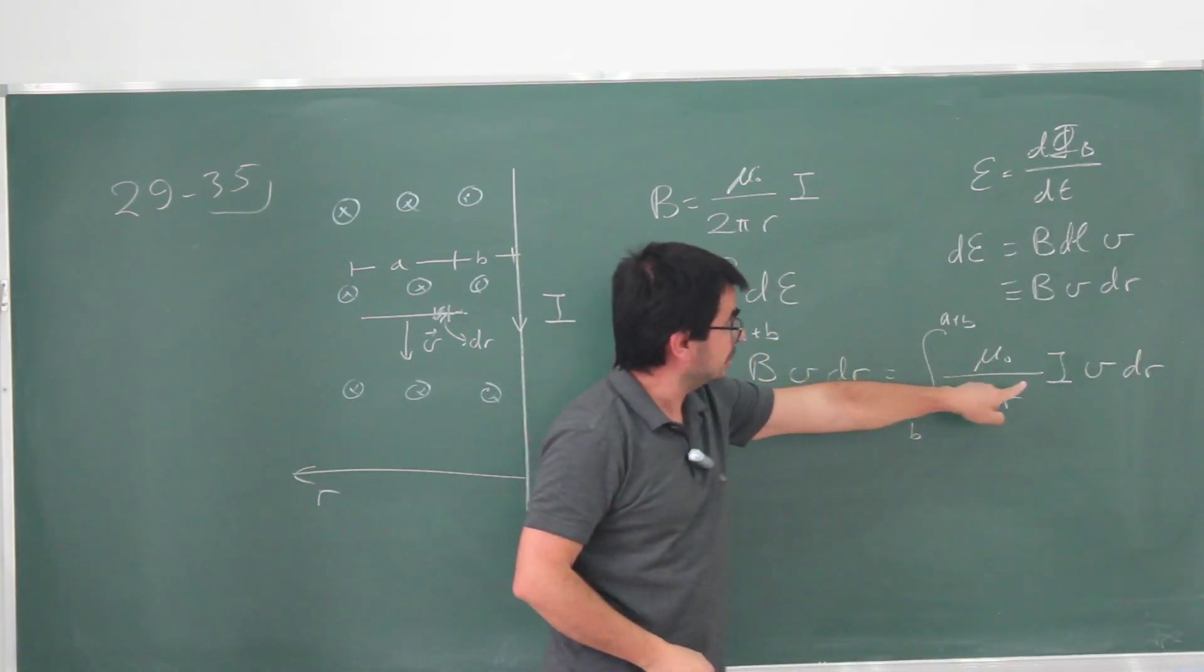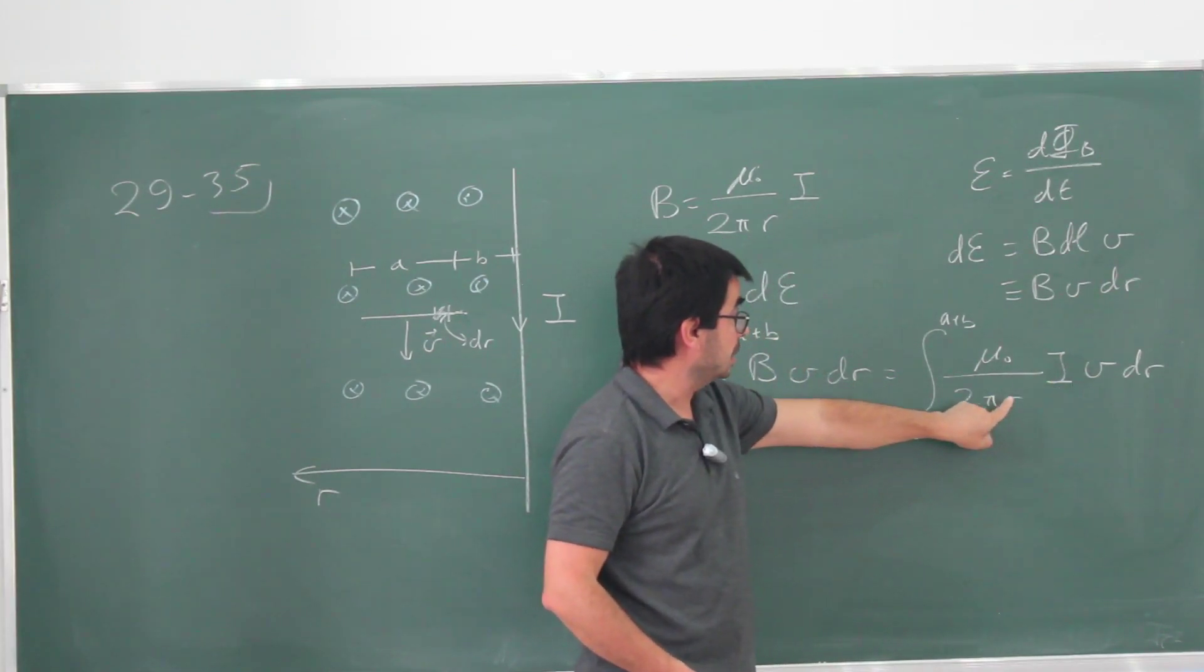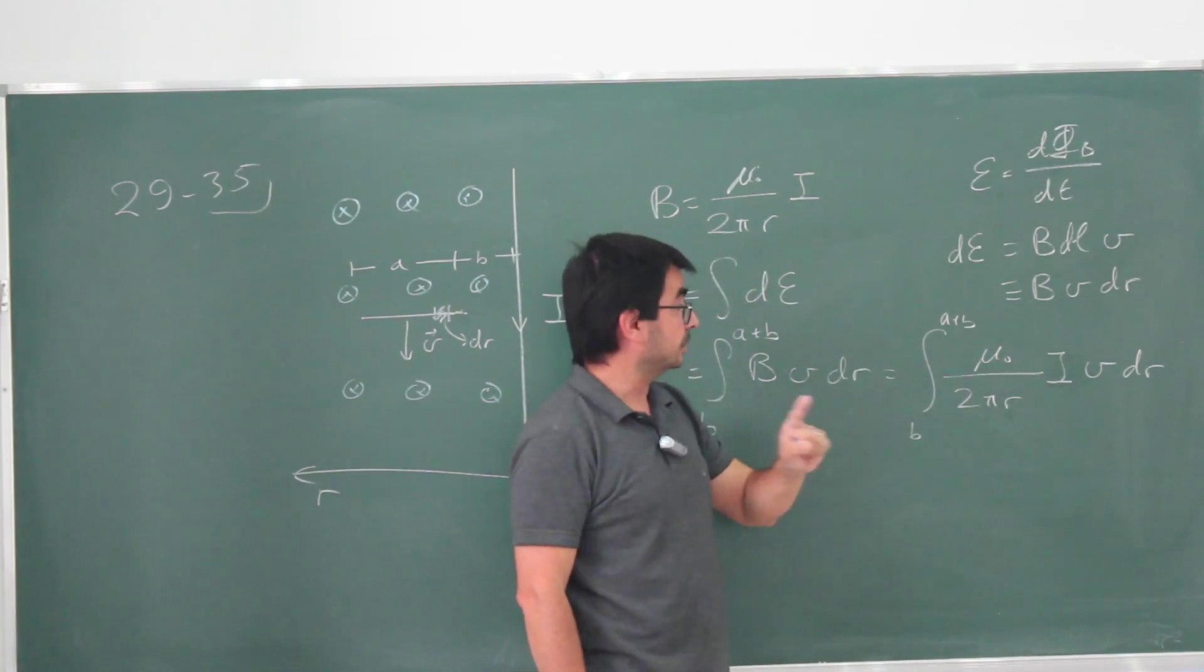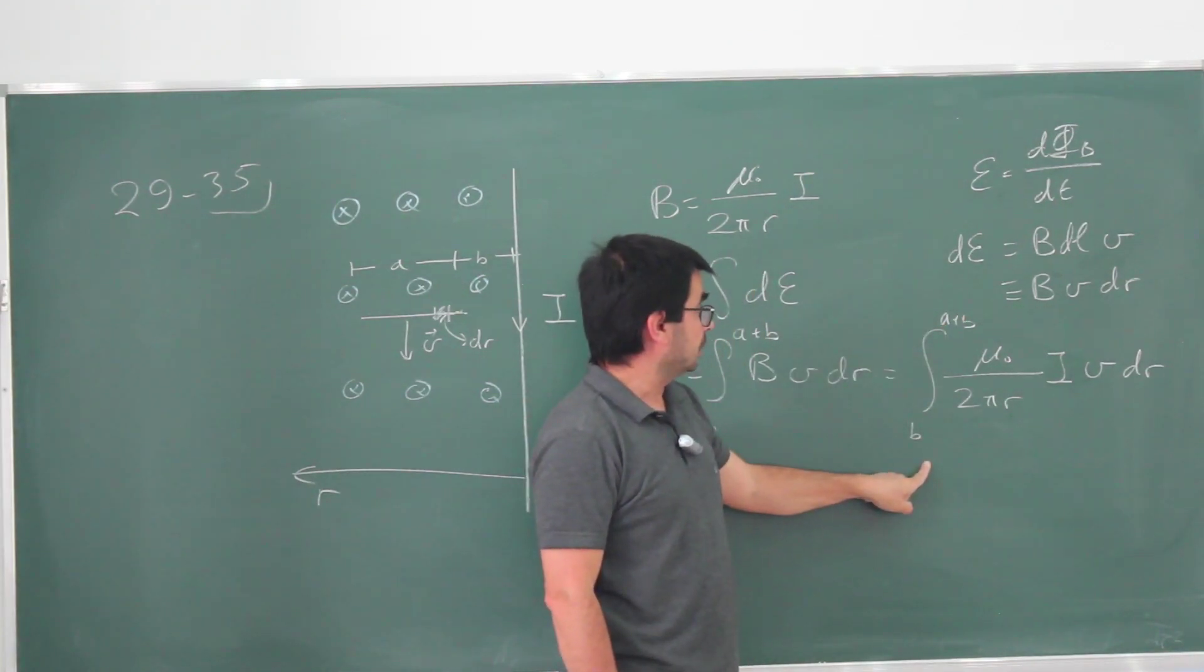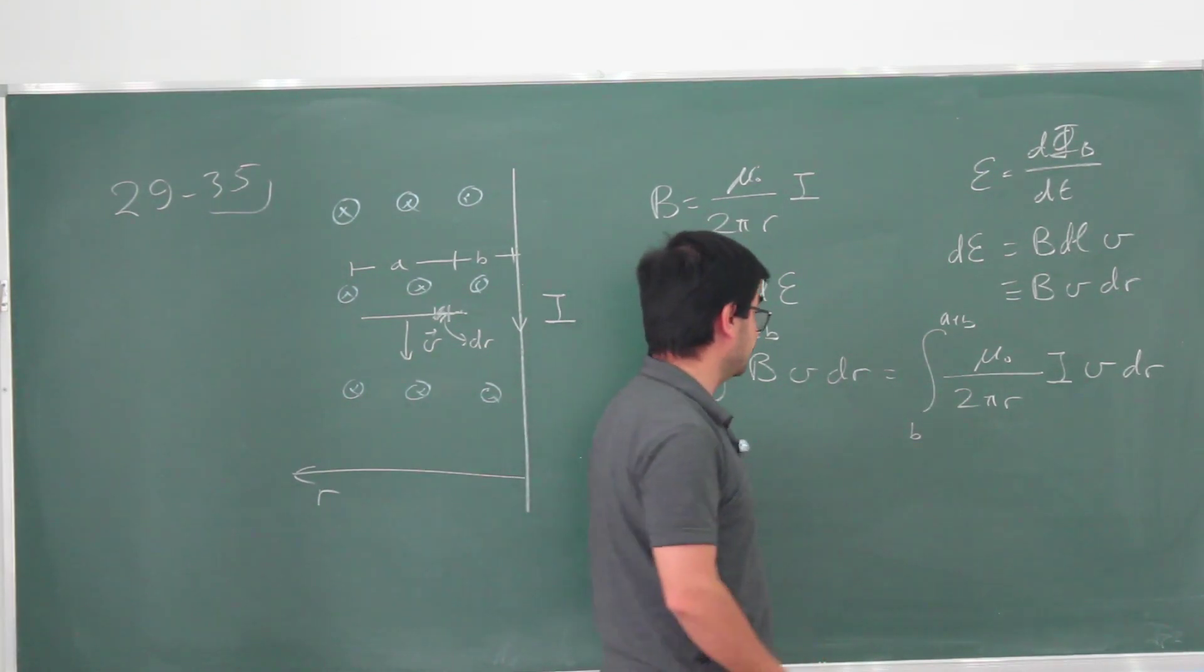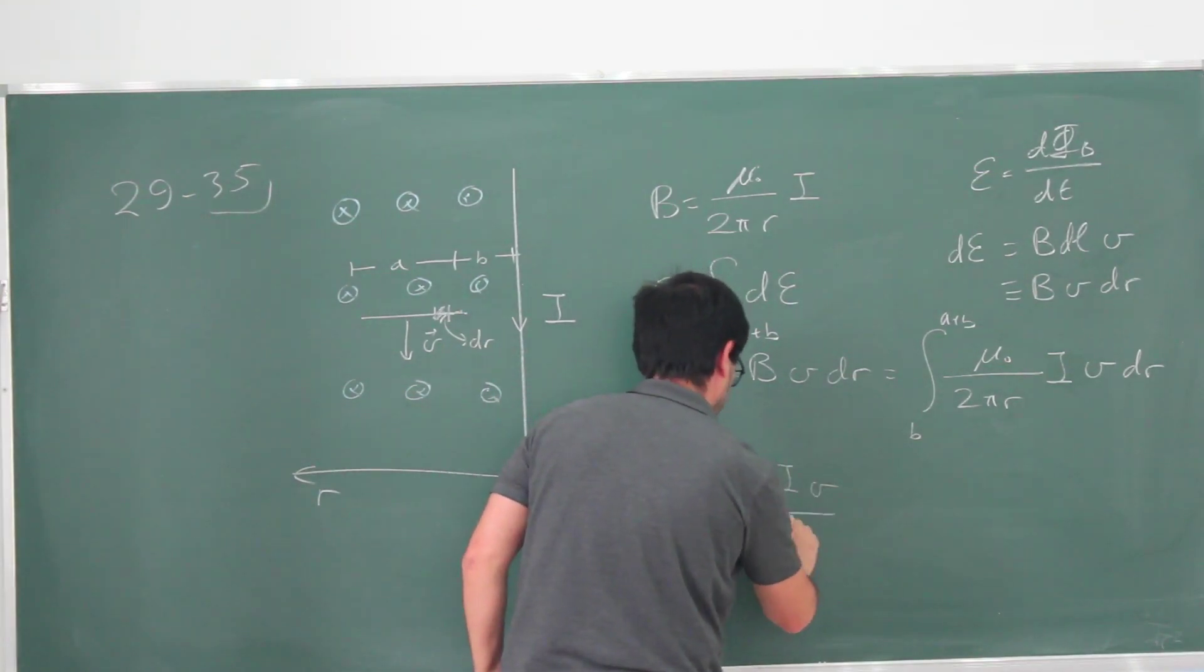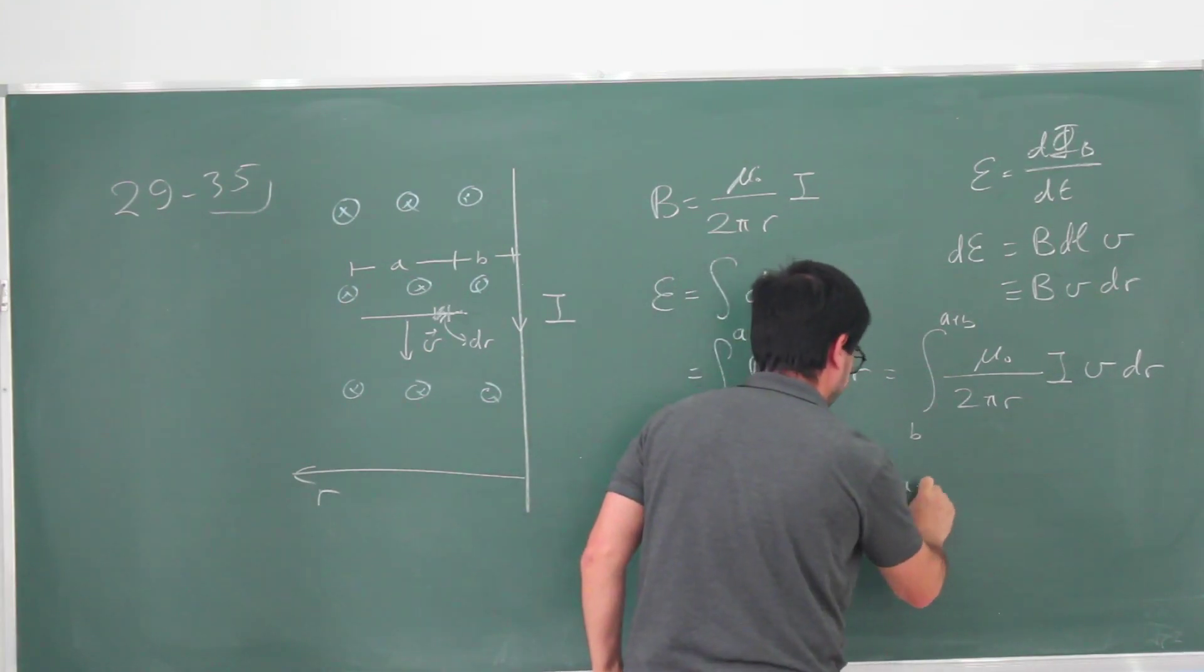μ₀ is a constant, I is a constant, V is a constant, 2π is a constant. I can take all of those out. I end up with the integral of 1 over r. That's the natural logarithm. The difference of natural logarithms is the natural logarithm of the ratio. This is going to be μ₀IV/(2π) times the logarithm of (A+B)/B.